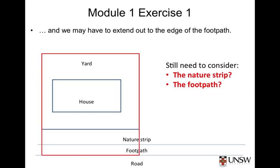In many countries, the nature strip and the footpath are the responsibility of the homeowner — at least to mow the grass on the nature strip or to clear snow from the footpath. So we may also need to include that aspect as part of our system boundary in those countries. In most cases, that would be as far as we need to extend our boundary, as the local council is responsible for the road.